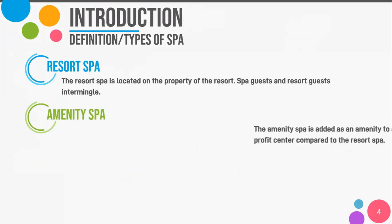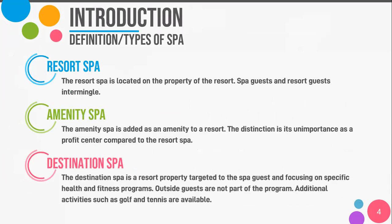There are actually three distinct types of spa: resort spa, amenity spa, and destination spa. When we talk about resort spa, the resort spa itself is located on the property of the resort and is combined with the resort. The spa guests and resort guests will intermingle with each other. The resort is not only purposed for spa, but also to accommodate people.